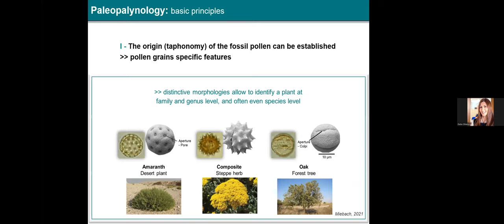These characteristics, combined with other principles and assumptions of pollen analysis, are the basis of paleo-palynology. Palynology allows the reconstruction of vegetation and climate from fossil pollen based on four principles: one, the taxonomy of fossil pollen can be established based on specific characteristics of each pollen grain.